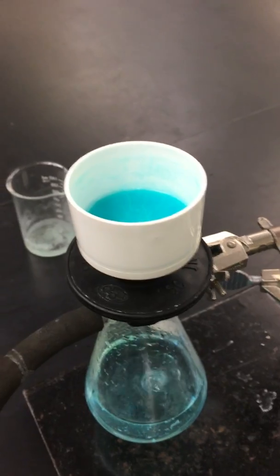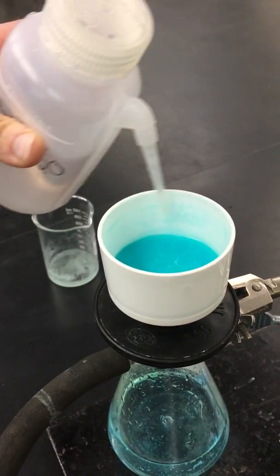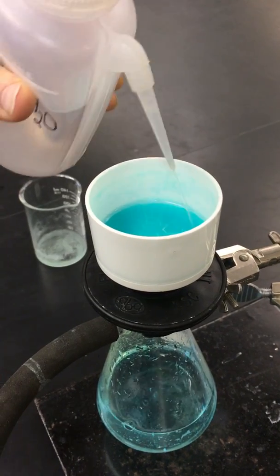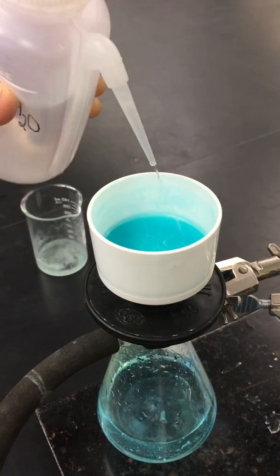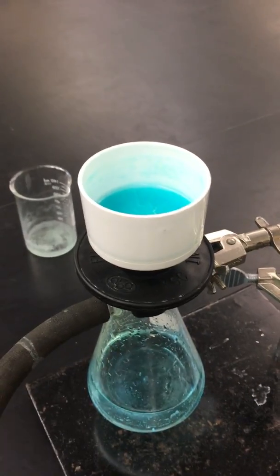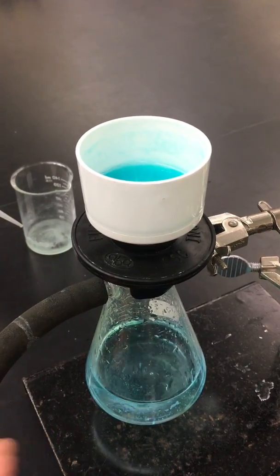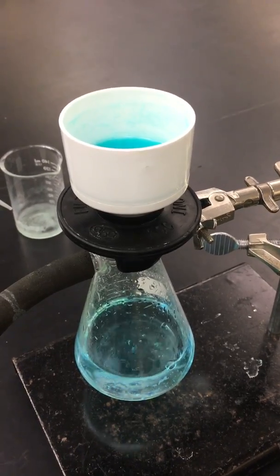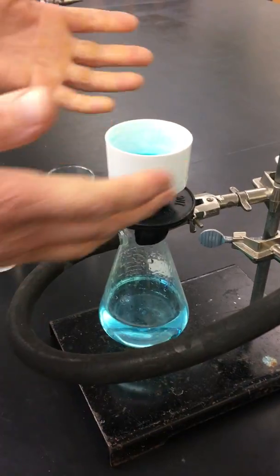Now what we want to do is rinse our solid to make sure that any spectator ions or the reagent that we have in excess has been passed through the filter paper and is being collected at the bottom as the filtrate. It's almost done. Okay, so we've washed it. Now the solid that we have at top should just be our copper phosphate.